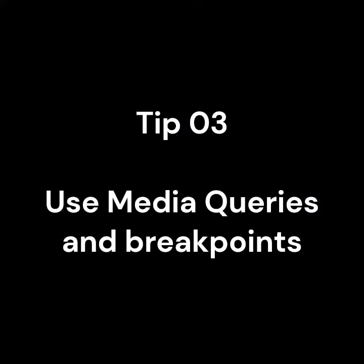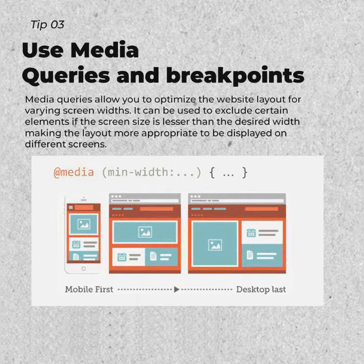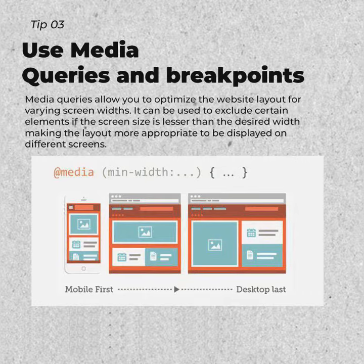Tip 03: Use Media Queries and Breakpoints. Media queries allow you to optimize the website layout for varying screen widths. It can be used to exclude certain elements if the screen size is lesser than the desired width, making the layout more appropriate to be displayed on different screens.